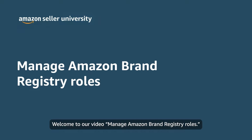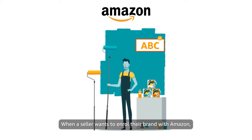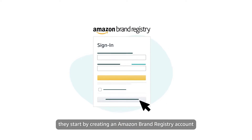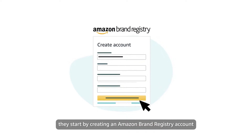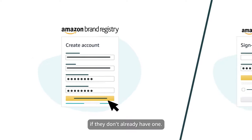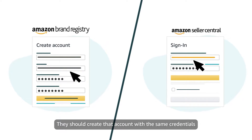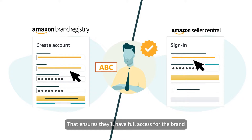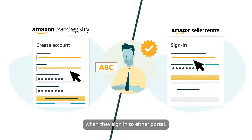Welcome to our video Manage Amazon Brand Registry Roles. When a seller wants to enroll their brand with Amazon, they start by creating an Amazon Brand Registry account, if they don't already have one. They should create that account with the same credentials they use to sign in to Seller Central. That ensures they'll have full access for the brand when they sign in to either portal.